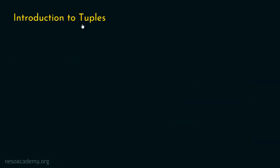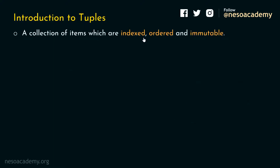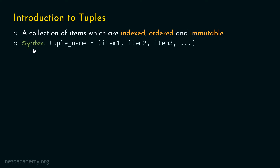What is a tuple? A tuple is a collection of items which are indexed, ordered, and immutable. We will understand the meaning of these terms as we proceed with an example. For now, just understand that a tuple is a collection of items just like a list, but there is a difference. The syntax is: first specify the name of the tuple, then the assignment operator, and within parentheses we can specify as many items as we want. The visual difference is that a list is wrapped within square brackets, while a tuple is wrapped within round brackets.